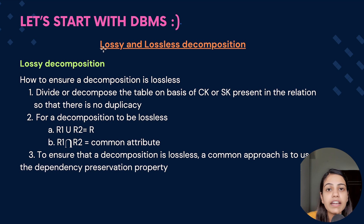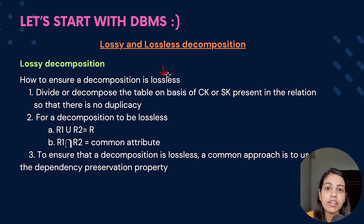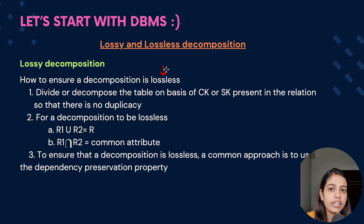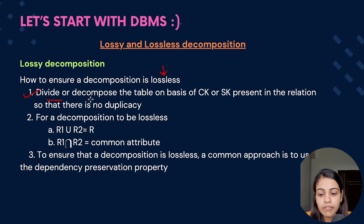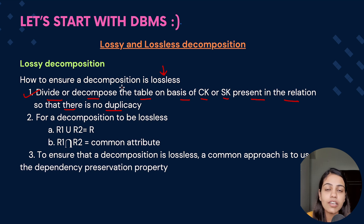In lossy decomposition the data was lost and extra data was introduced. We need to ensure that even after decomposition the data is not lost — that is a lossless decomposition. To ensure lossless decomposition, the first pointer is to divide the table on the basis of a candidate key or super key present in the relation so there is no duplicacy. The attribute on which we divide the table should be a candidate key or super key so this unique identifier helps eliminate duplicate data.